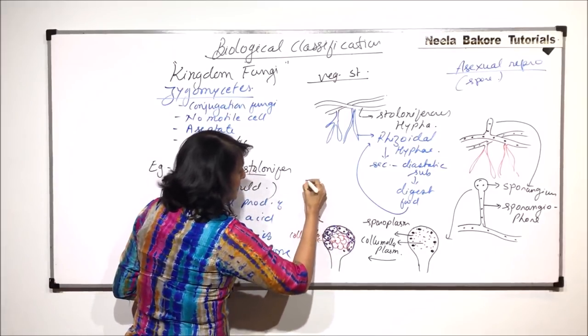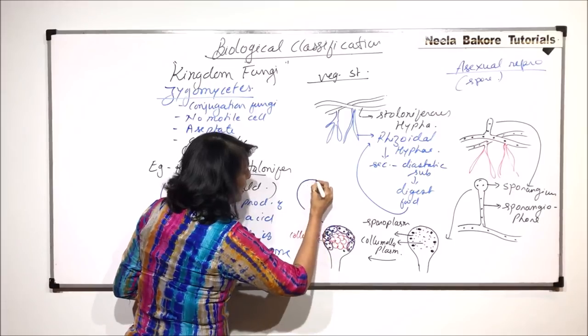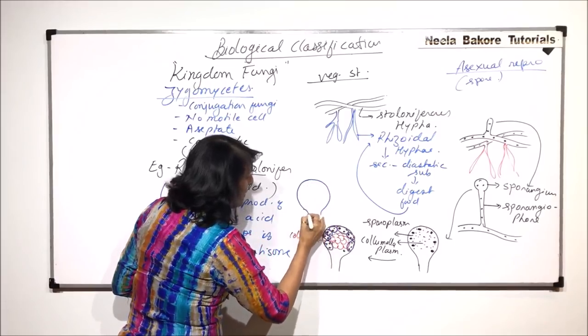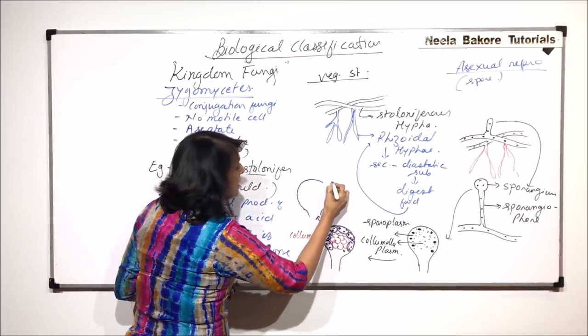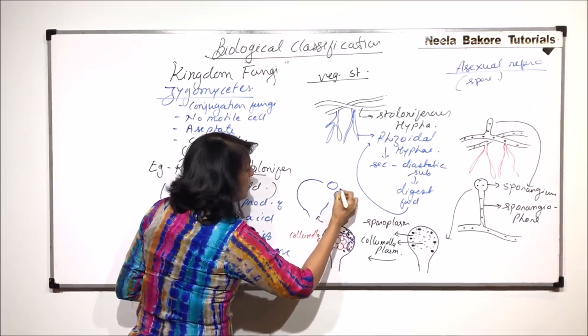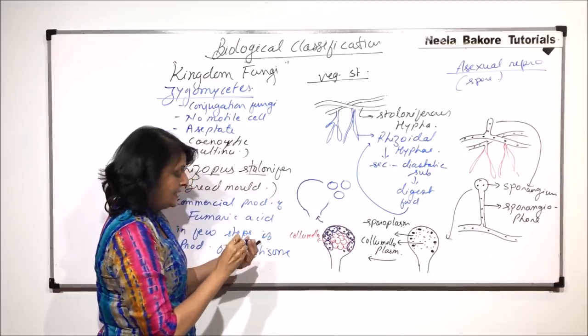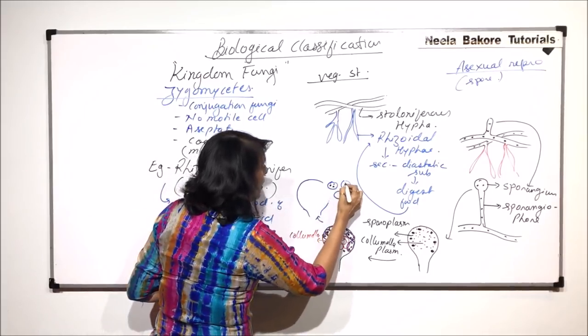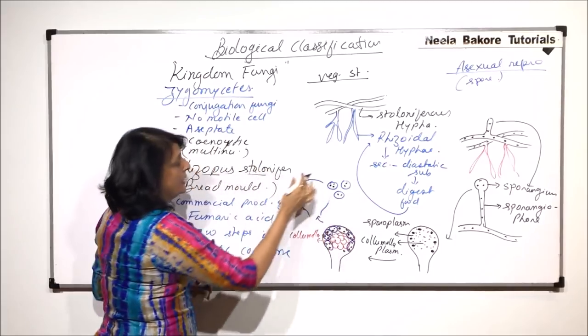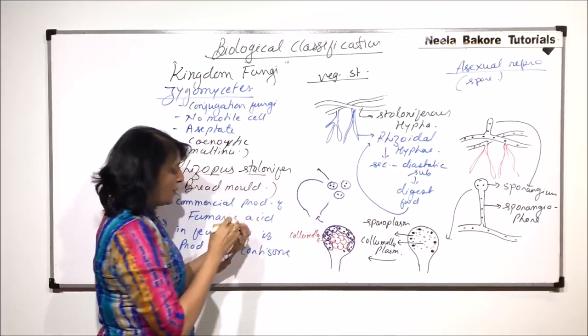After this, the sporangium is going to rupture. When it ruptures, all these spores are released and each spore has one, two or many nuclei.